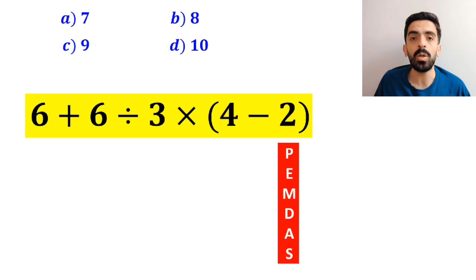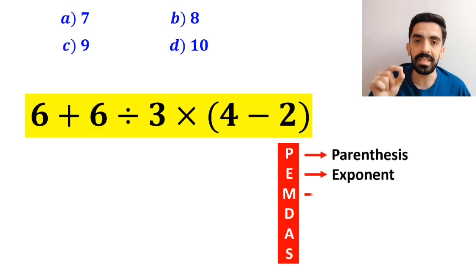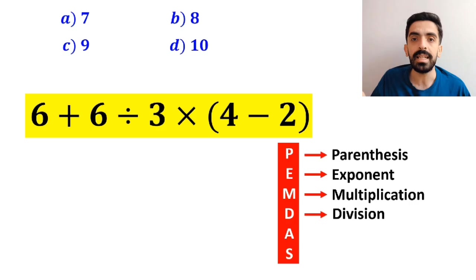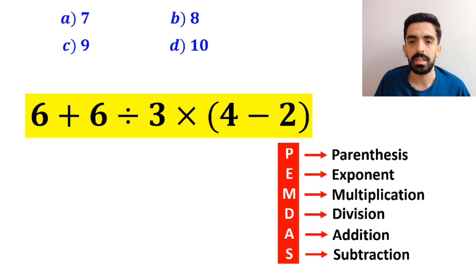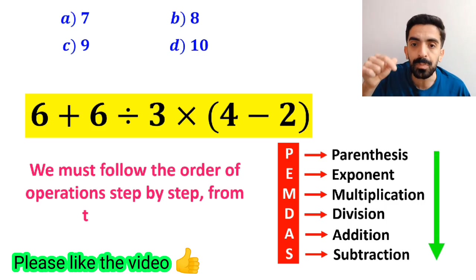To solve this problem, we must follow the PEMDAS rule. In this rule, P stands for parenthesis, E stands for exponent, M stands for multiplication, D stands for division, A stands for addition, and S stands for subtraction. We must follow the order of operations step by step from top to bottom.